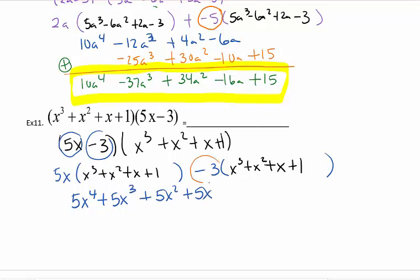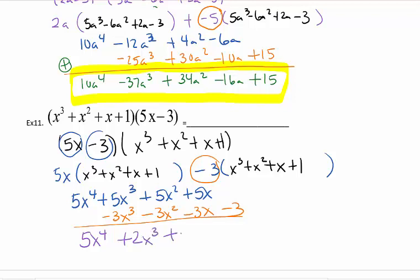Again, be very careful of this minus sign. So I'm going to go ahead and do it in a vertical format. So I have minus 3x cubed, minus 3x squared, minus 3x, and minus 3. In this case, the minus would go to each piece. And now I'm going to add down. Gives me 5x to the fourth plus 2x cubed plus 2x squared plus 2x minus 3. As long as I didn't make any careless mistakes, that is my answer.